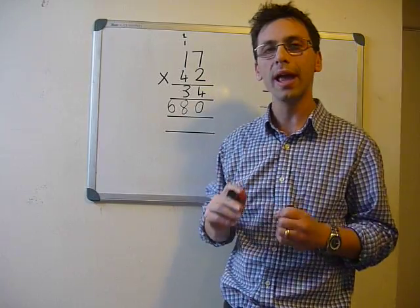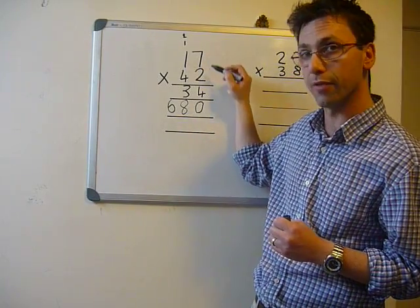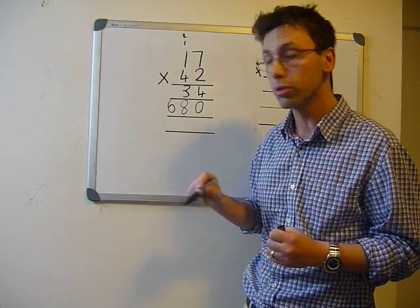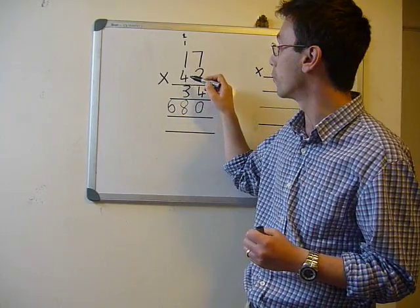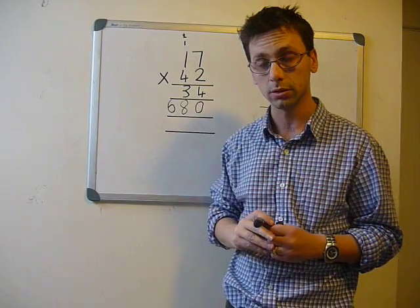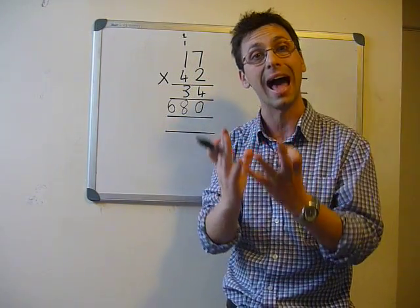Now we have done 2 times 7 and then 2 times 1. We carried the 0. Then we have to do 4 times 7 and 4 times 1. Now we have to add them up.